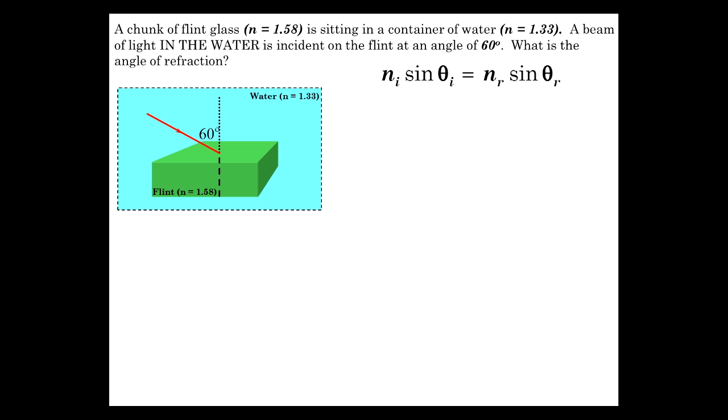Let's go ahead and solve for the refracted medium angle. Sine of theta R is N I sine of theta I over N R, and the inverse sine of all that. So N incident 1.33 sine of 60 over 1.58, 47 degrees.